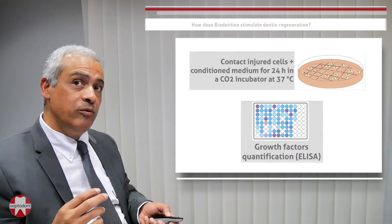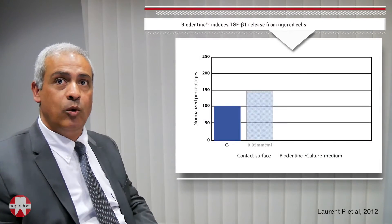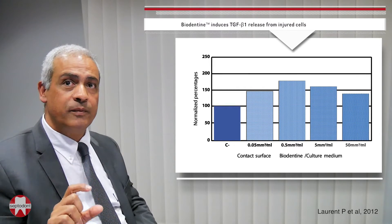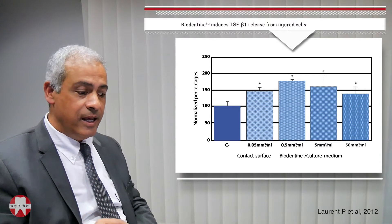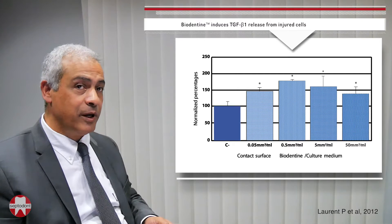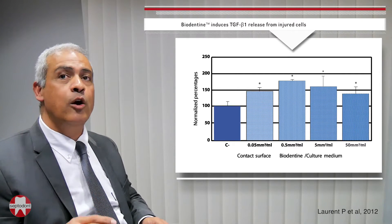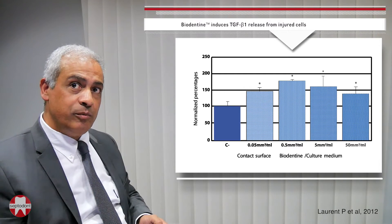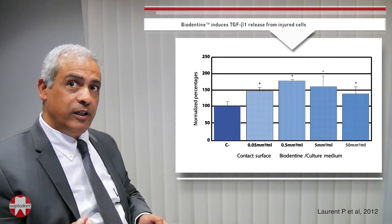We also measured an important factor, TGF-beta 1. Regardless of the material surface used, we noticed a significant increase of TGF-beta 1. This is important because TGF-beta 1 is involved in the differentiation of odontoblasts — rendering these cells able to produce reparative dentin.